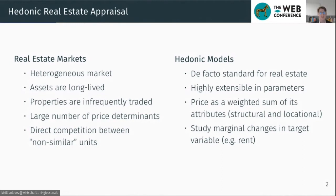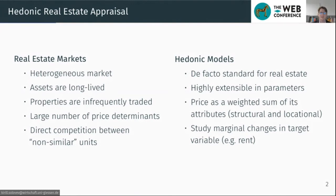That brings me to the hedonic models. Hedonic models are the de facto standard for real estate valuation. They study marginal changes in target variables such as rent or price per meter squared depending on the variables of interest. They are not constrained just by structured parameters — they can be extended with almost any information source and put great weight on heterogeneity of the market and the effects of individual characteristics. In real estate, those attributes can be divided into structural and locational parameters. Structural parameters look inside the apartment — for example, how many rooms it has and how old it is — while locational parameters look outside at factors such as view or the amount of sunlight per day. This flexibility makes hedonic models particularly suitable for heterogeneous real estate markets, but it also means you can't always compare scientific works since some hedonic models might not share parameters with others.